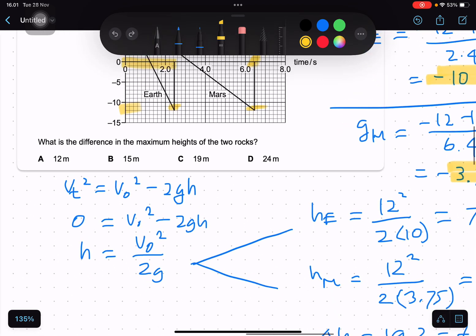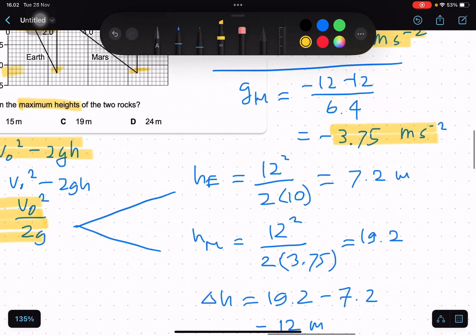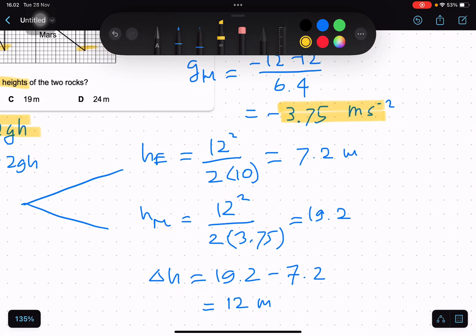Then we go to this equation: vₜ² equals v₀² minus 2gh. When at maximum height, the velocity is zero, so we get the equation h equals v₀² divided by 2g. We'll find this for Earth and then for Mars.